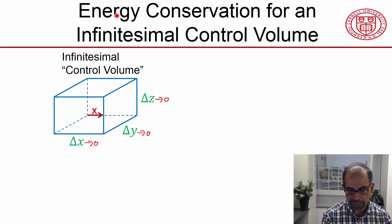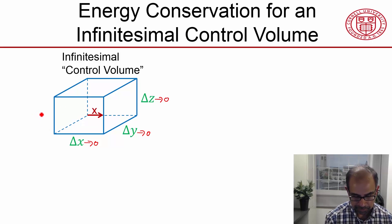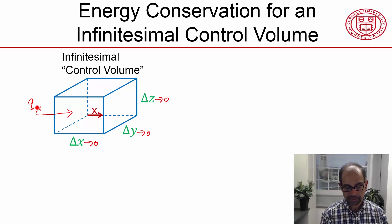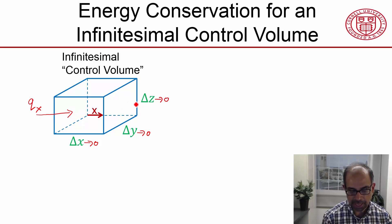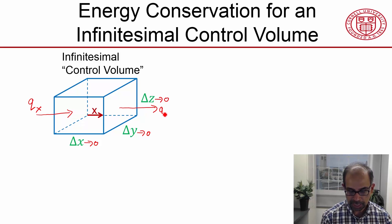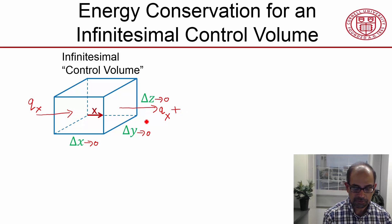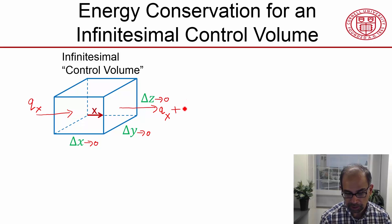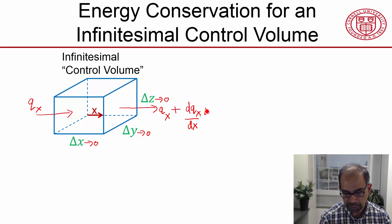Let's do an energy conservation for this infinitesimally small control volume. There is a heat flow through that face, which I will denote as q sub x — this is the heat flow in. And then there is a heat flow out through the opposite face, which I will denote as q_x plus a small change, because that distance is vanishingly small. That change I can find from the gradient: if the rate of change of q sub x is that, multiplying by the distance gives how much it has changed.